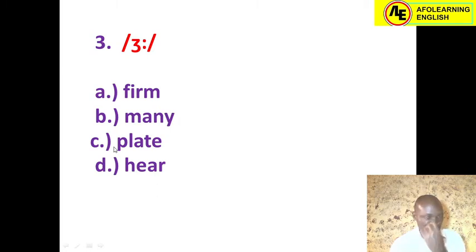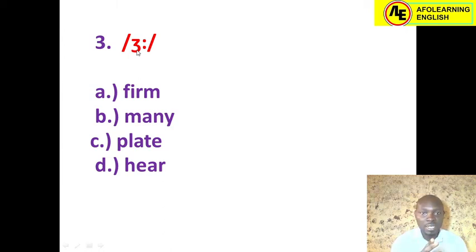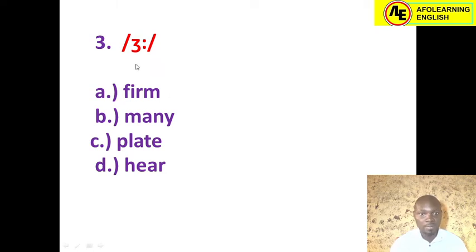Number three is a vowel sound: the long /ɜː/. As I mentioned in my previous video on Full Learning English YouTube channel, this sound is often represented by letter combinations like -IR or -UR. The answer without wasting time is 'firm,' because it contains the long /ɜː/. Option B, 'many,' has no /ɜː/ sound. So the correct answer is option A: firm.